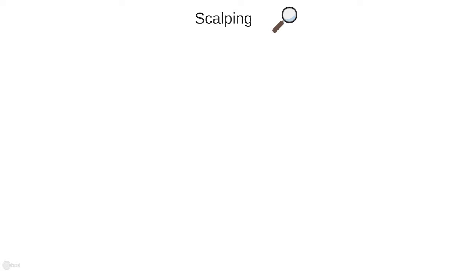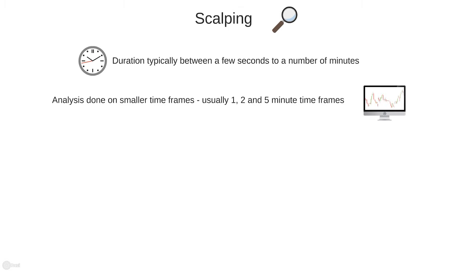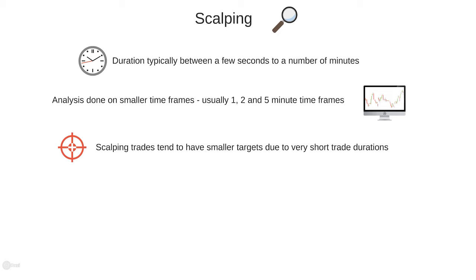Let's start by looking at scalping. Scalping usually refers to very short term trades — anything from a few seconds to a number of minutes. Due to the very fast nature of these trades, analysis is usually done on the very small time frames: think 1 minute, 2 minute and 5 minute charts. These trades also tend to have smaller profit targets in terms of points or pips than longer term trades, because price doesn't tend to move that far within very short periods of time.